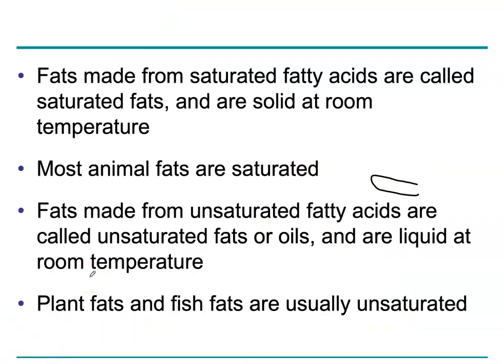Most fats — Crisco, lard, butter — are solid at room temperature. Most animal byproducts and animal fats are saturated, meaning they have single bonds. Whereas plant products are unsaturated. Omega fatty acids, which are fats from fish, are also unsaturated.